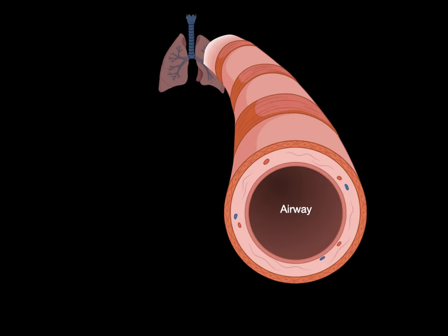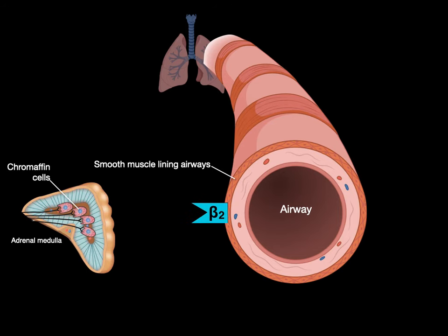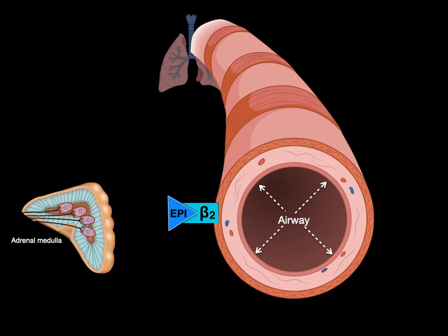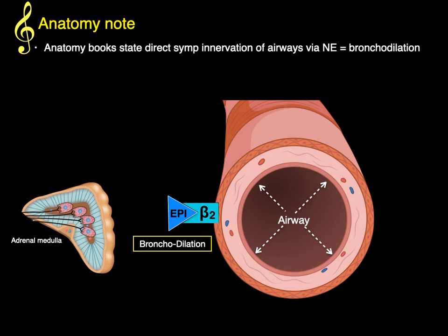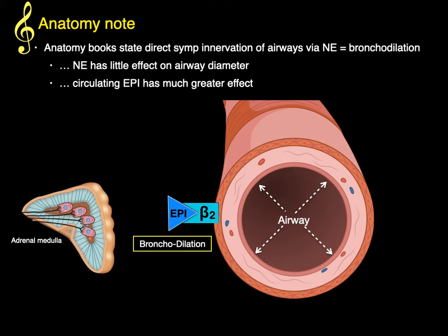Let's talk about bronchial smooth muscle stimulation causing bronchodilation. Here are the lungs and bronchi — one airway with smooth muscle lining that airway has beta-2 adrenergic receptors. When chromaffin cells release epinephrine, it causes bronchodilation. An anatomy note: anatomy books often state that direct sympathetic innervation via norepinephrine causes bronchodilation, but norepinephrine actually has very little effect on airway diameter. Circulating epinephrine has a much greater effect, which is why an EpiPen is given in anaphylactic shock — epinephrine causes those airways to dilate.